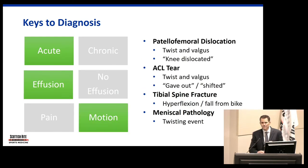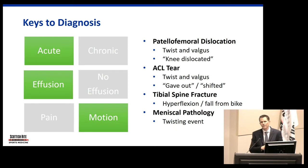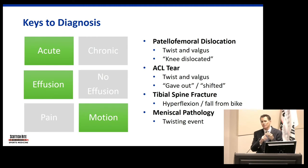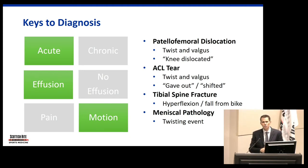To narrow that list down, let's think about the mechanism. With patellofemoral dislocation, it's a twist and a pop, and kids will tell you their knee dislocated — they felt a big event. With an ACL tear, they'll say the knee twisted, it popped, and it just kind of shifted; it didn't really dislocate. With a tibial spine fracture, it's often hyperflexion during sports or snow skiing — classically a fall from a bike. And a meniscus can be a twisting event.